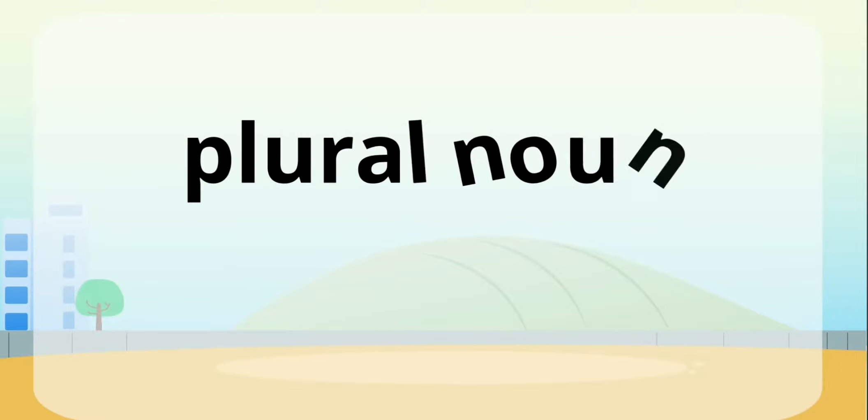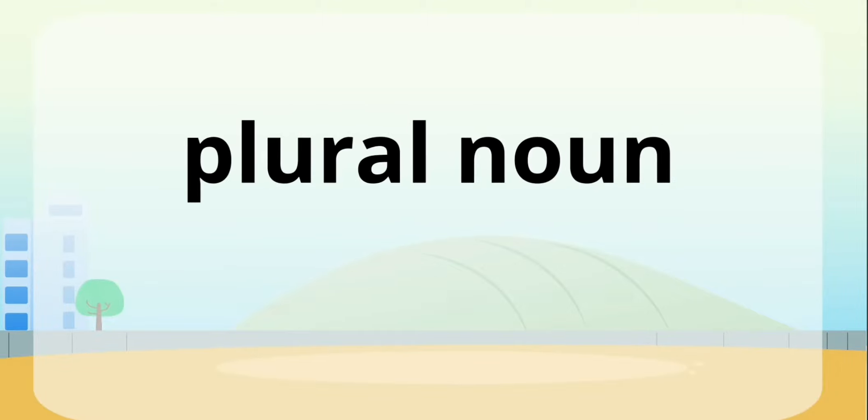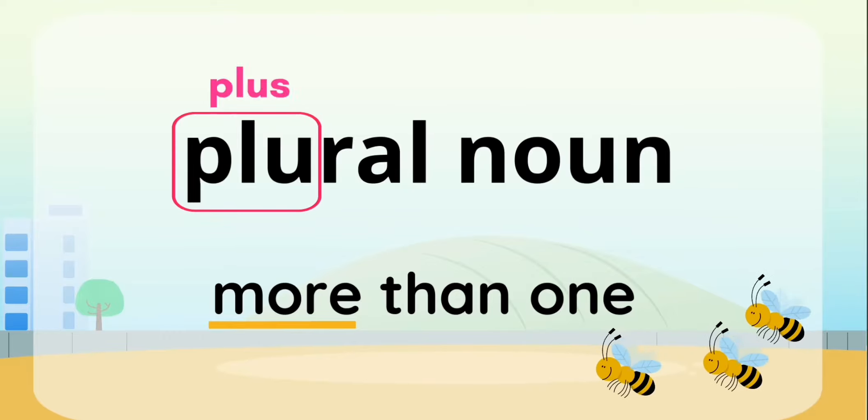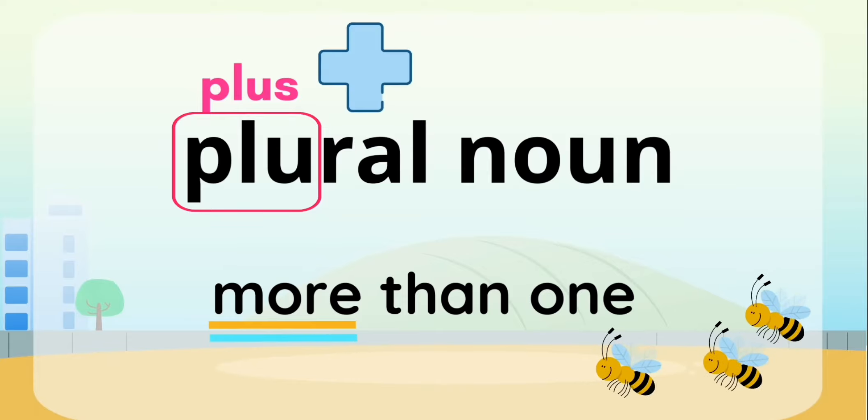What about a plural noun? A plural noun means that there's more than one. A good way to remember this is that the word plural has the word plus hidden in it, which means more. Like in math, when you want to add more, you use the plus sign, right?